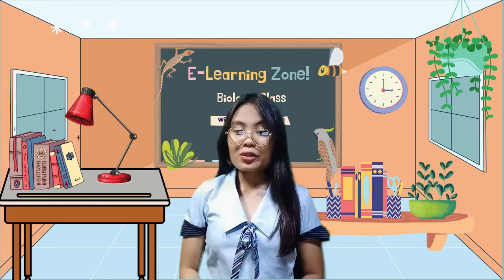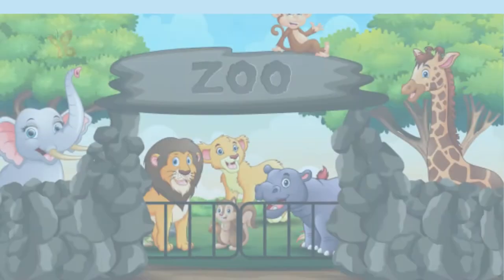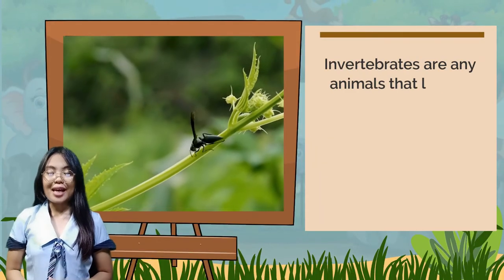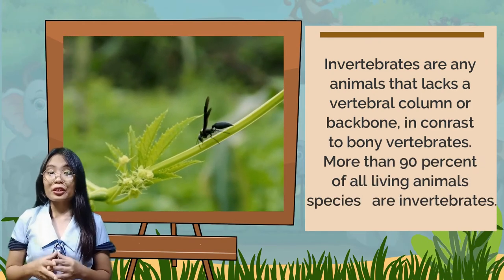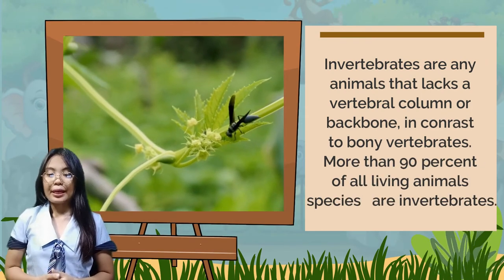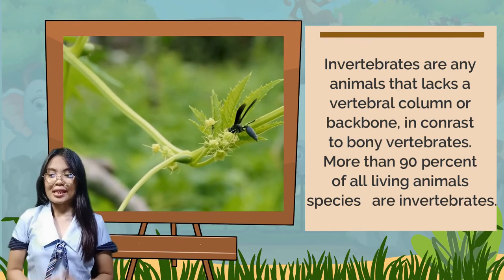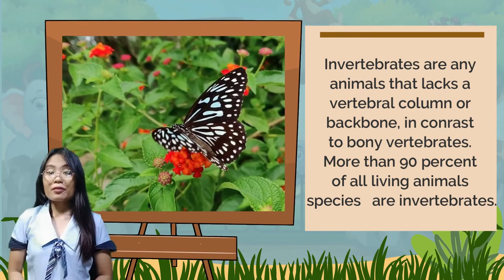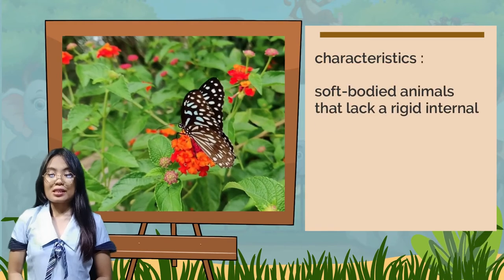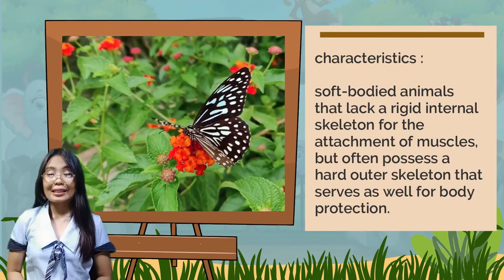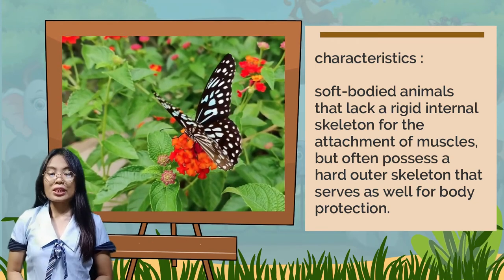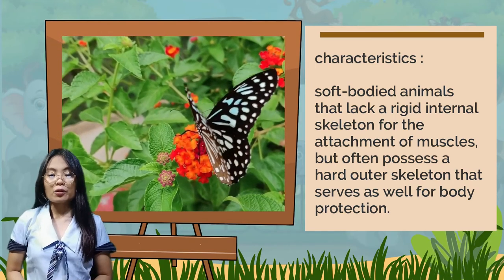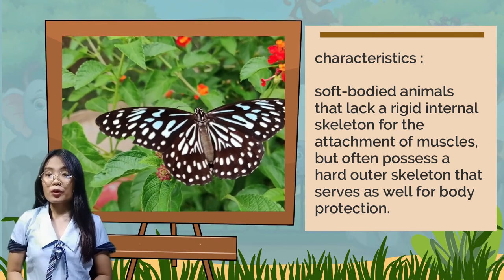Let's get to know about invertebrate animals. Invertebrate animals are any animals that lack a vertebral column or backbone. In contrast to bony vertebrates, more than 90% of all living animal species are invertebrates. Invertebrates are generally soft-bodied animals that lack a rigid internal skeleton for the attachment of muscles, but often possess a hard outer skeleton that serves for body protection.